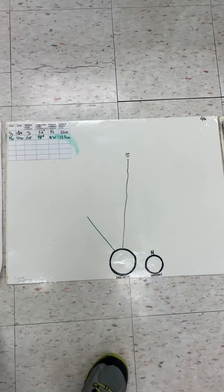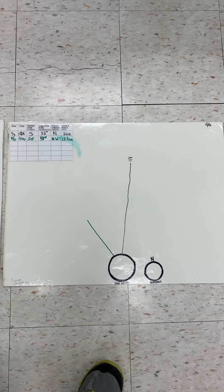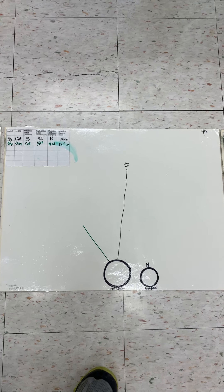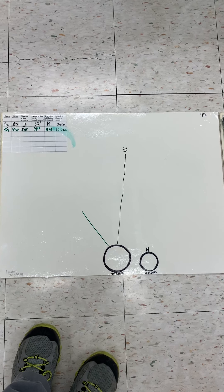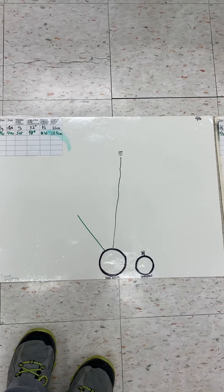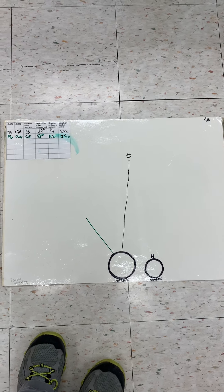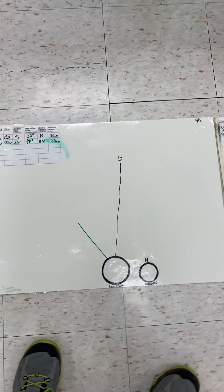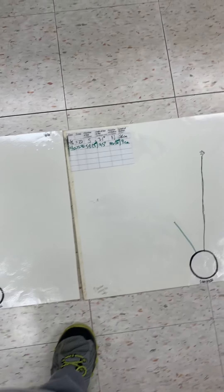Now we come to fourth period, which was at 12:28. At 12:28, you can see the green is again on the left. We had a shadow length of 12.5 centimeters and our angle there was 48 degrees.